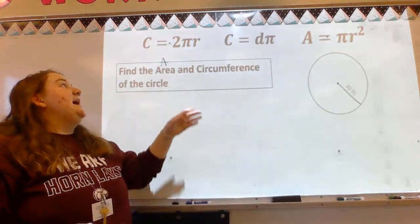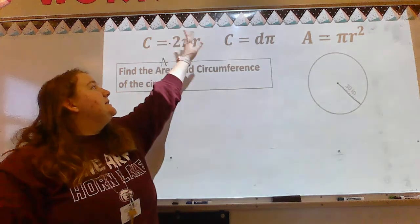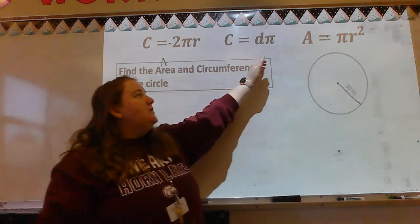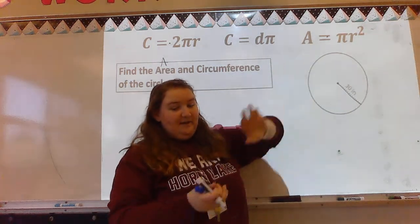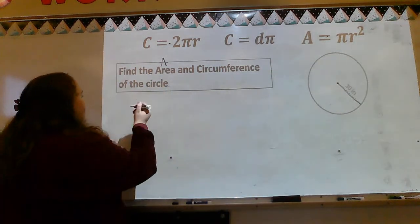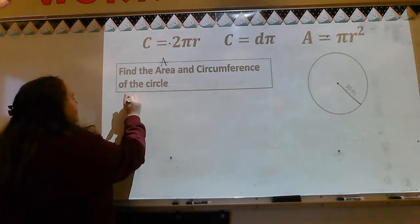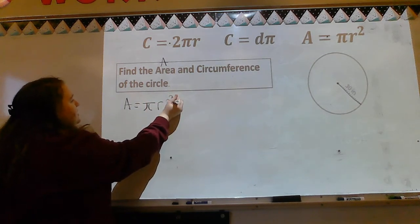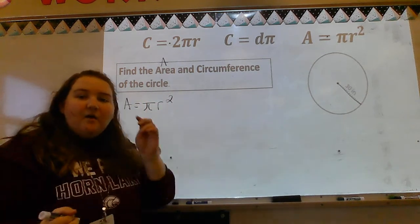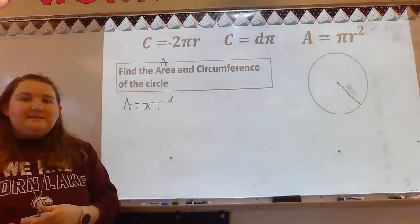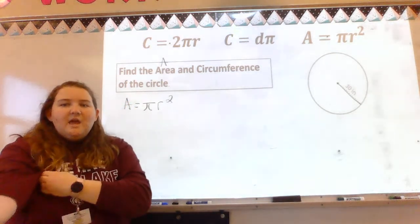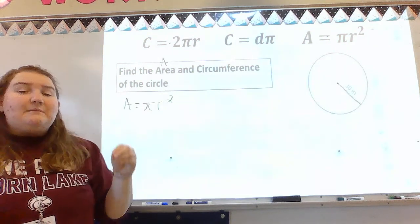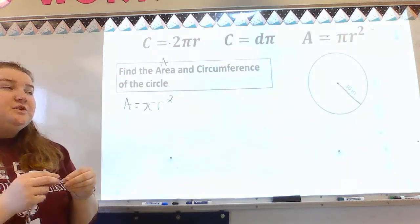Look at your three formulas. I have C, C, and A. So if area is A, we're going to use the area formula: area equals pi r squared. That is our basis, that is where we're starting. Now I'm going to plug in my information that I know.